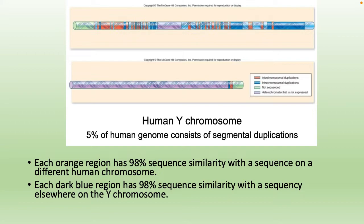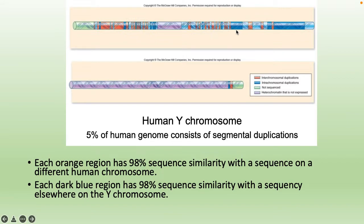The human Y chromosome, found in males, does consist of some duplications as shown by the color code. Each orange region has 98% sequence similarity with a sequence on a different human chromosome, and each dark blue region has 98% similarity with a sequence elsewhere on the Y chromosome.